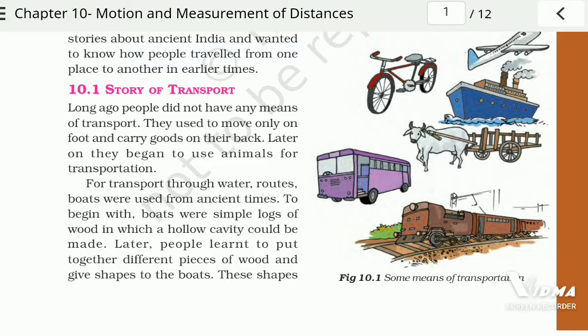After that, animals were used for transportation. Then slowly, water routes were used and boats came into use in ancient times. Ancient boats were very simple — just logs of wood with a hollow cavity. Later, the shape of boats was improved to a streamlined shape like a fish. Then more inventions happened, including the invention of the wheel.